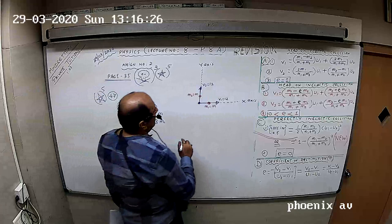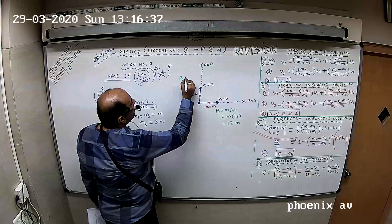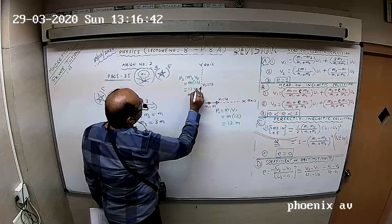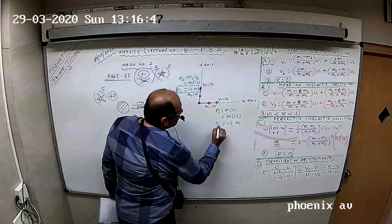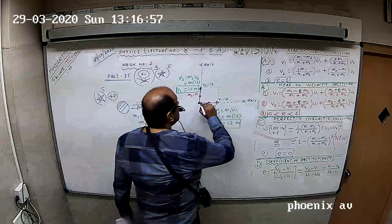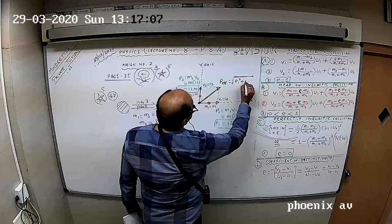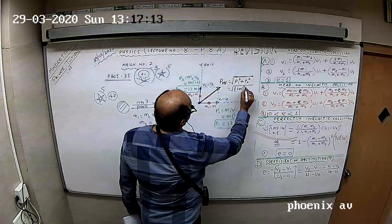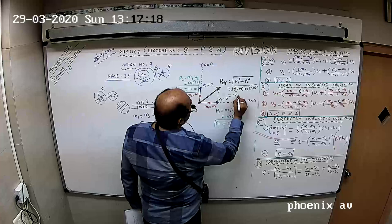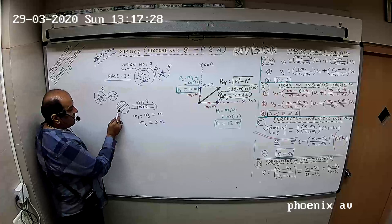This velocity is 12 meters per second. This momentum is 12M, that momentum is 12M. These two are at right angles. Resultant momentum of these, P effective is root of P1 square plus P2 square. That means it is root of 12M whole square plus 12M whole square, which is 12M root 2.